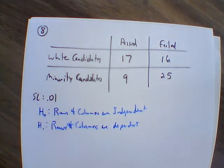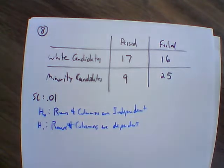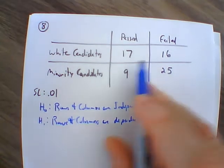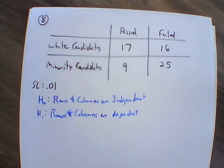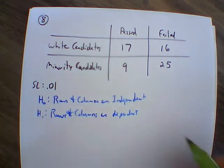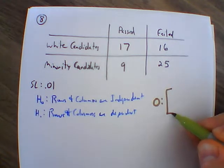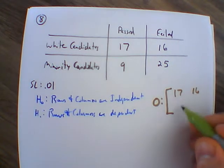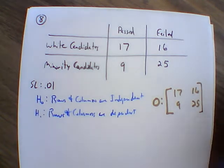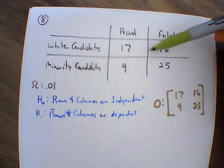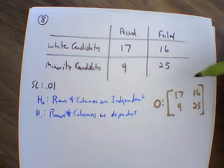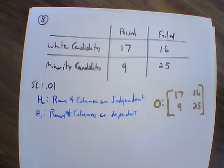So now we need to go through and calculate this. I'm going to show you how to do this one by hand. Looking at our observed matrix, we have 17, 16, 9, and 25. We're writing it as a matrix to organize the numbers without all the words, so we can look directly at what is happening.